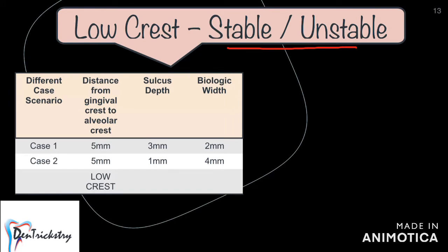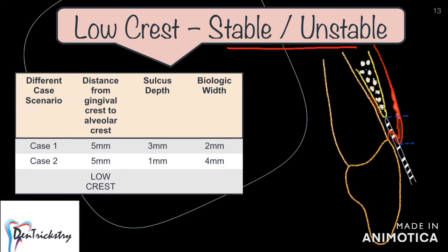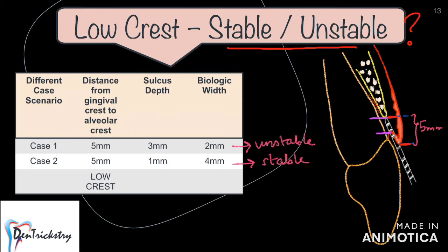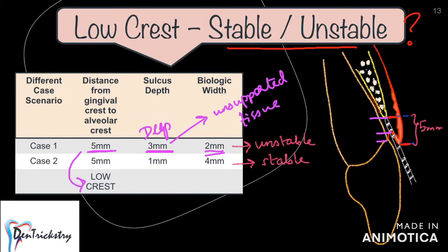Low crest can be stable or unstable — some low crest patients are susceptible to gingival recession while others have quite a stable attachment apparatus. The crest position is measured from the gingival crest to the alveolar bone, and the sulcus depth and biologic width help determine the difference. For example, if the total distance from the gingival crest to the alveolar crest is 5 millimeters, that falls into low crest. If you have a sulcus depth of 3 millimeters and a biologic width of 2 millimeters, you have 3 millimeters of unsupported tissue from the gingival crest to the base of the sulcus. This unsupported gingival tissue is not stable and such cases are susceptible to gingival recession — this is classified as unstable low crest.